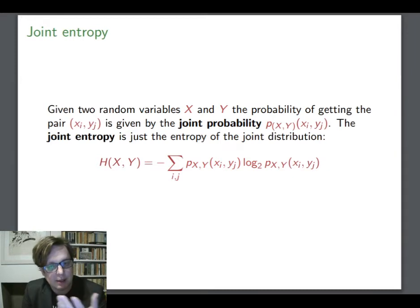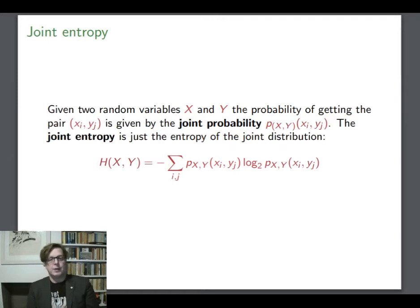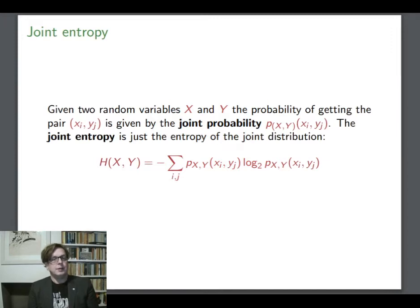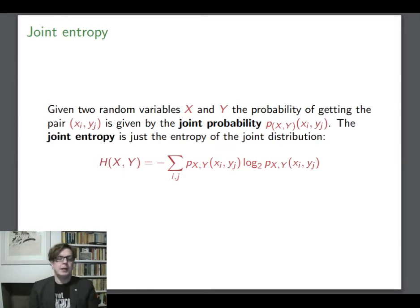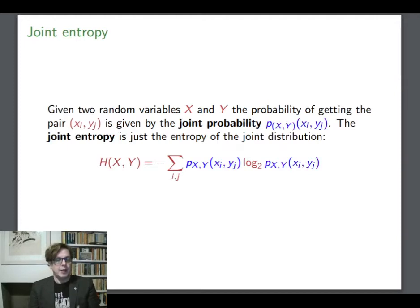So if we have two random variables X and Y, X will have a set of outcomes X1 up to Xn, Y will have a set of outcomes Y1 up to Yn. We can form the joint space — the Cartesian product, the space of pairs (X, Y). If that expanded set of outcomes has a probability distribution on it, that's the joint probability distribution P(X, Y). P(Xi, Yj) is the probability of getting the outcome Xi and the outcome Yj at the same time — the probability that X will produce Xi and Y will produce Yj. The joint entropy is what we get if we use that as the probability distribution in the Shannon's entropy definition.